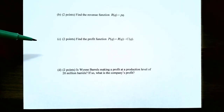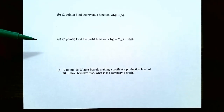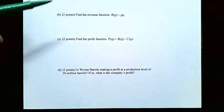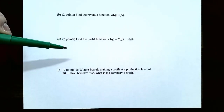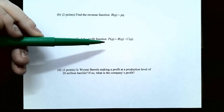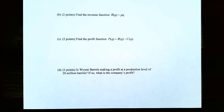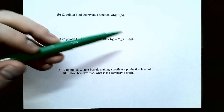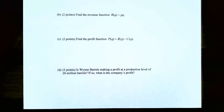In Part C, since the owner of Wayne Barrels is primarily concerned about profit, you need to calculate the profit function to find profit at any production level. The profit function is defined as profit equals revenue minus cost. Once you have the revenue function from Part B and the cost function given in the problem, you can calculate the profit function where Q represents the production level.